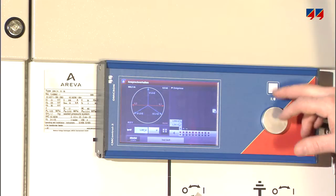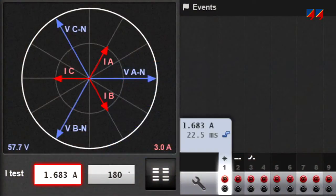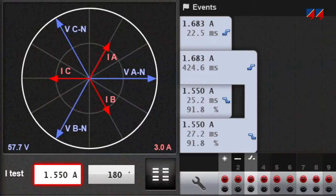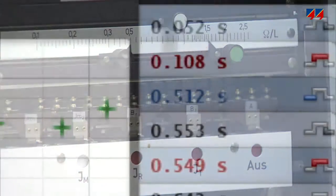During protection testing, the operating wheel can be used to quickly and easily determine pick-up and drop-off values. Trip times can also easily be measured.